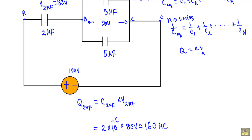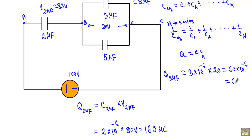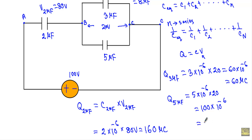The charge stored in the 3 microfarad capacitor equals 3 microfarad times 20 volts, which equals 60 microcoulombs. For the 5 microfarad capacitor, the charge equals 5 microfarad times 20 volts, which gives 100 microcoulombs of charge stored between the two plates of the 5 microfarad capacitor.